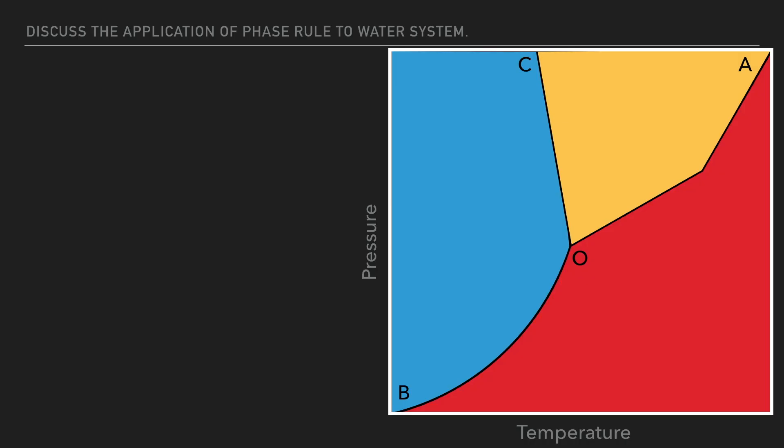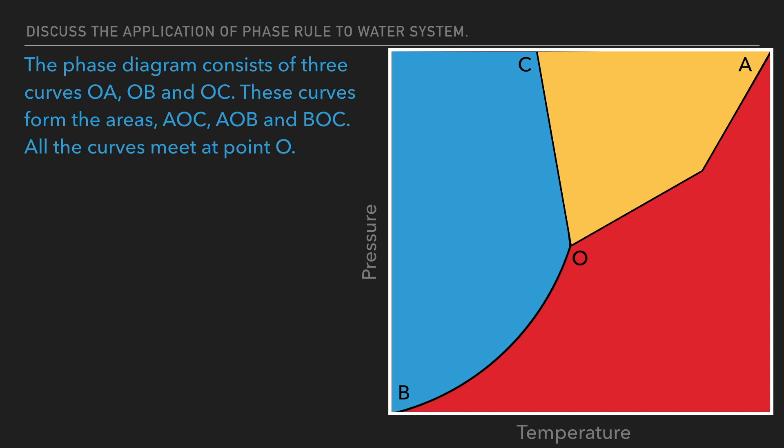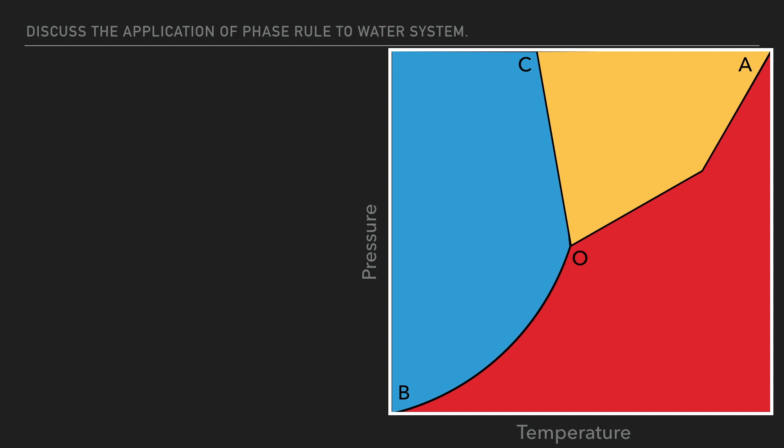The phase diagram consists of three curves OA, OB and OC. These curves form the areas AOC, AOB and BOC. All the curves meet at point O. Let's talk about the areas.